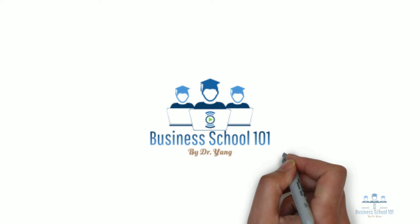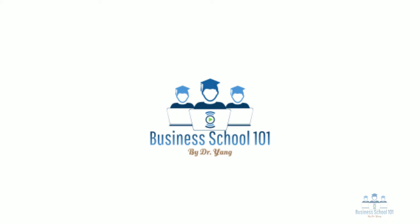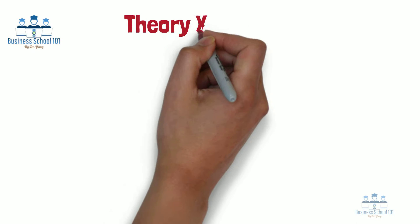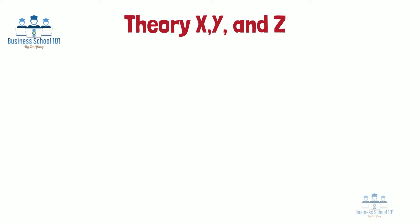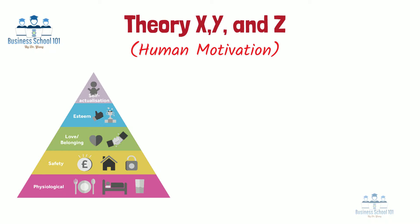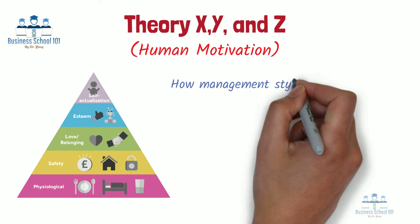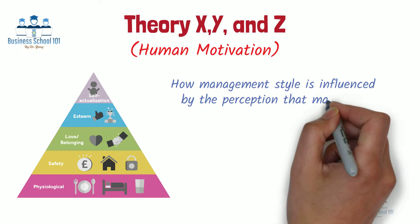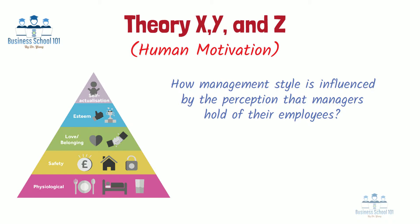Hello everyone, welcome to Business School 101. In management, Theory X, Y, and Z are theories of human motivation relating to Maslow's hierarchy of needs and how human behavior and motivation are factors in productivity. They describe how management style is influenced by the perception that managers hold of their employees. So, what are the differences among these three theories, and how are they implemented in the workplace? In this video, I will answer these questions for you.